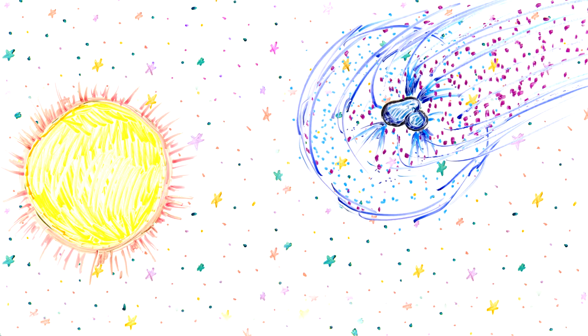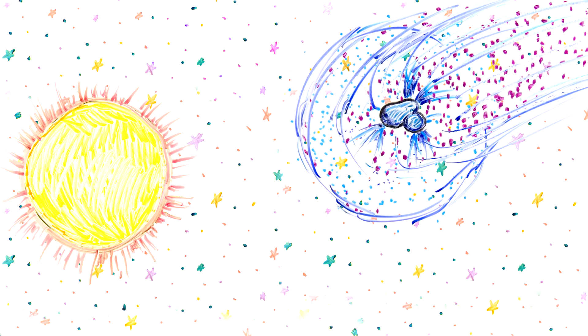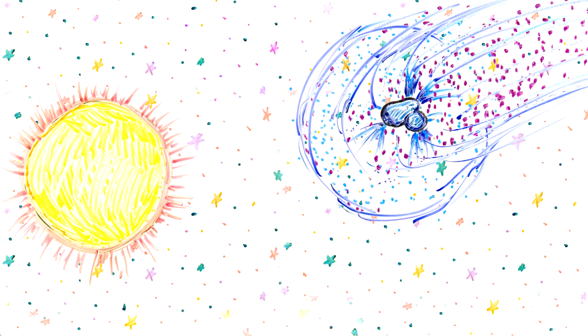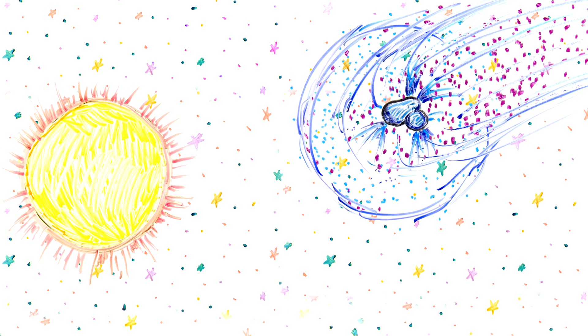Comets become active bodies that develop a coma and tails as they approach close enough to the Sun to sublimate water and other volatile compounds on their surface. Asteroids do not develop a coma. Or do they?